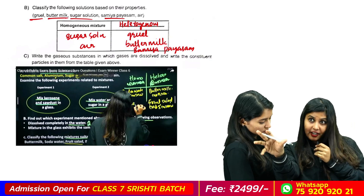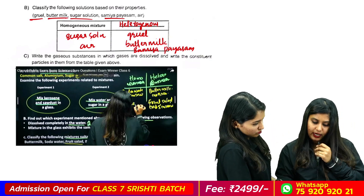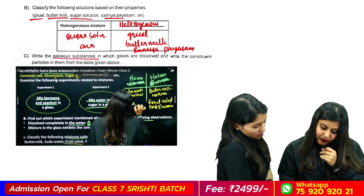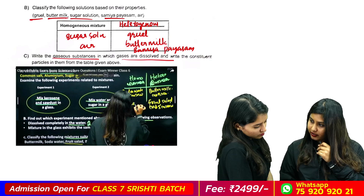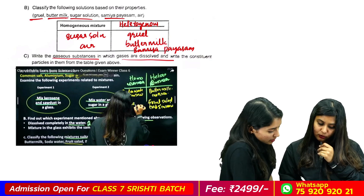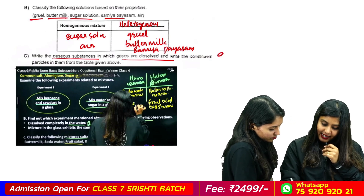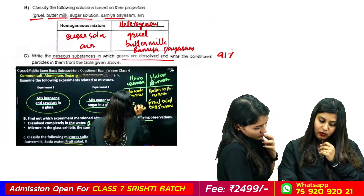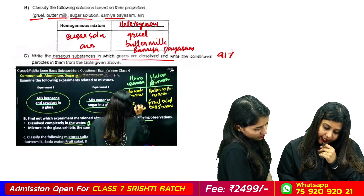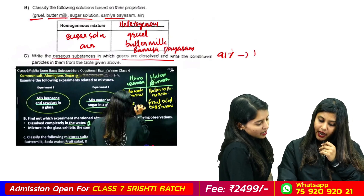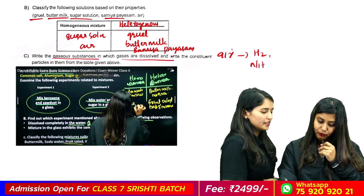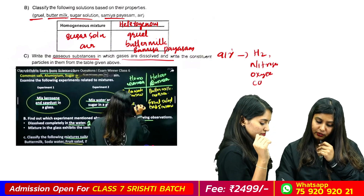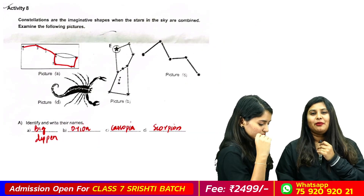It's homogeneous. Homogeneous mixture. Write the gaseous substance in which gases are dissolved. What is the gaseous substance? Write the constituent particles. That is the air. Hydrogen. Nitrogen. Oxygen. Carbon dioxide.